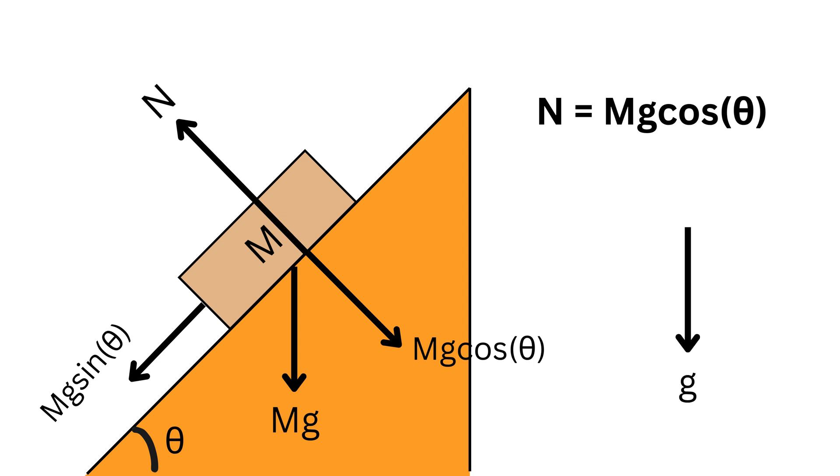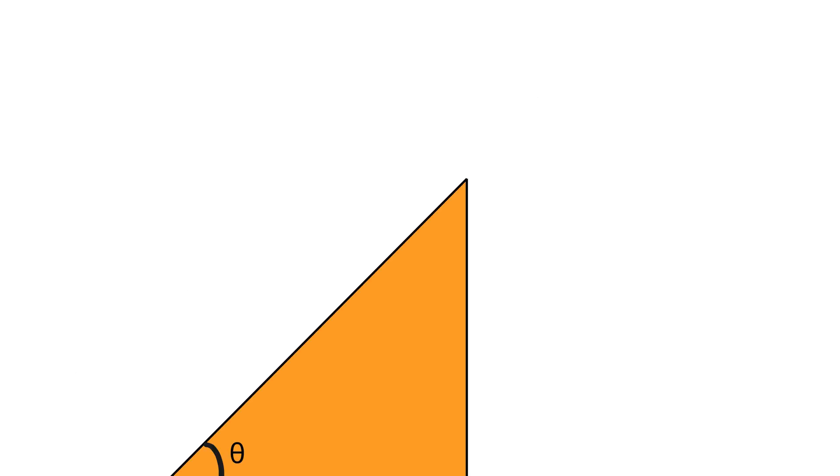Note that g acts in the downward direction and we assume up the incline as positive direction. Now, if this is clear, then we will start solving a challenging two-block inclined plane problem with friction.